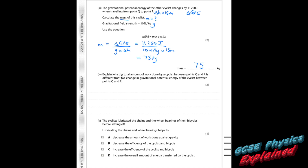Part four. Explain why the total amount of work done by a cyclist between Q and R is different from the change in gravitational potential energy between Q and R. Energy is always lost in real life because of friction — that energy gets lost as heat to the surroundings. In this case, the friction is air resistance, so some work is done to overcome air resistance.